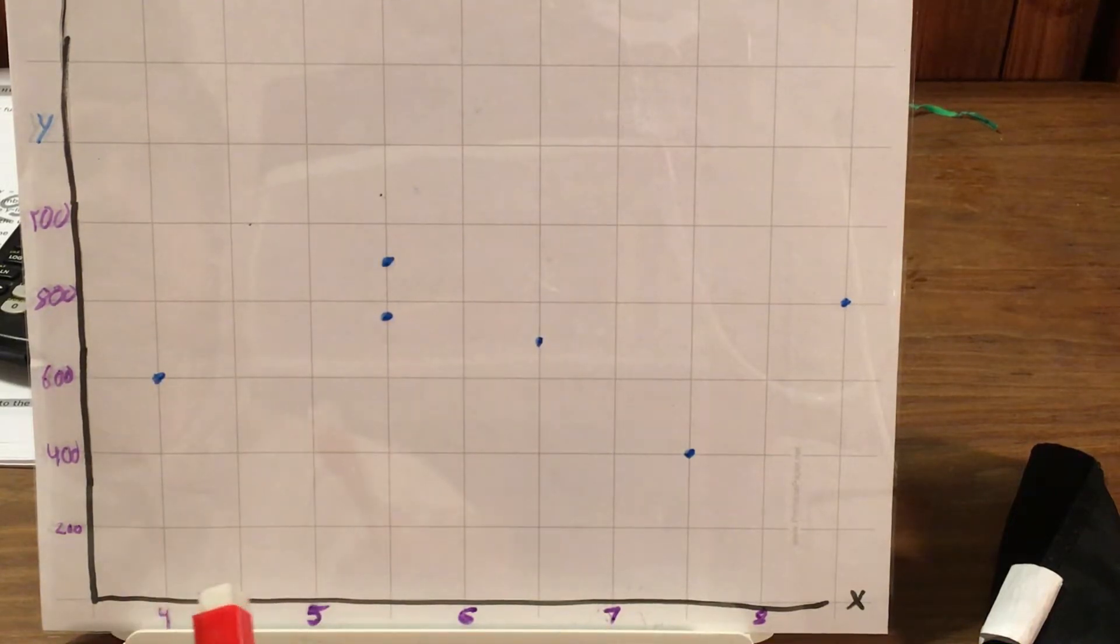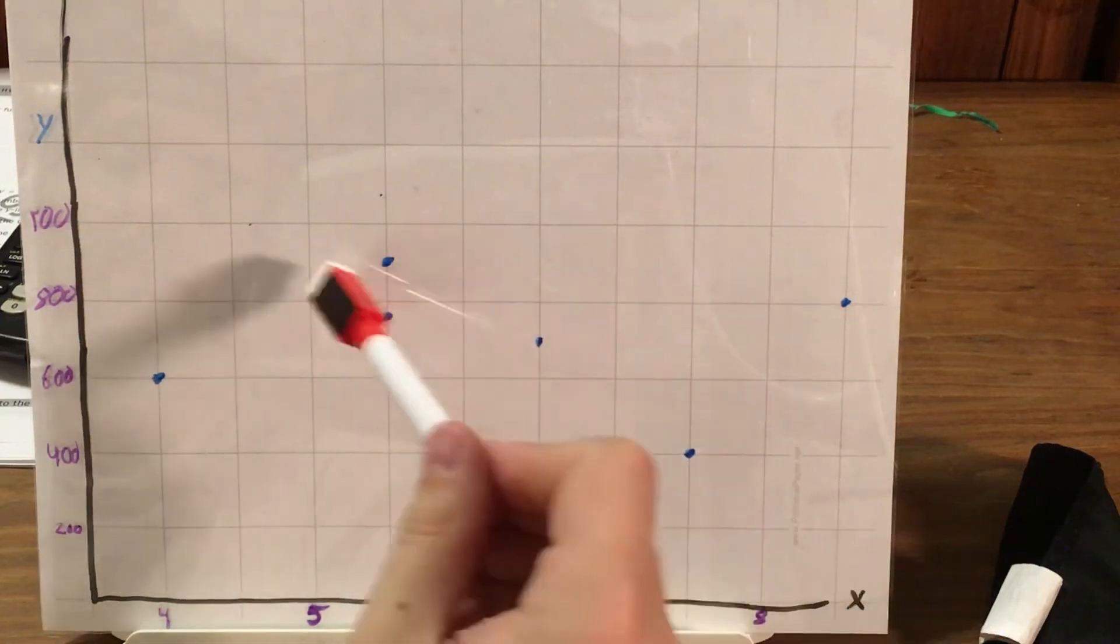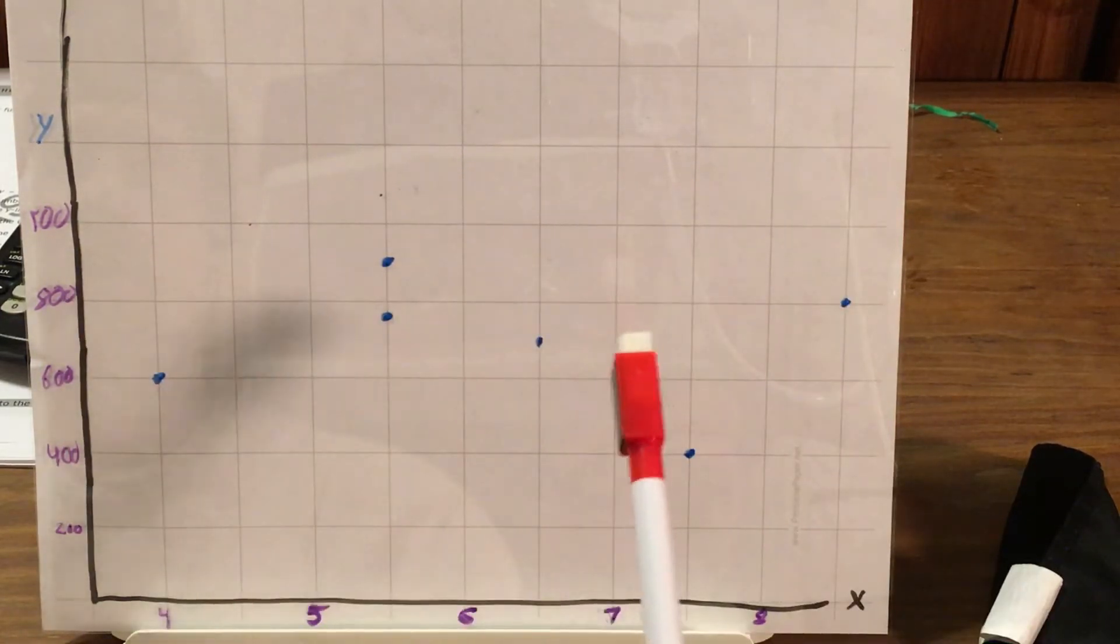they look a lot more like a cloud than a line. And I can actually see how I could draw a line down here. But I could also draw a line here. There's a couple different lines that I can make. And because there's a couple different lines that I could make.